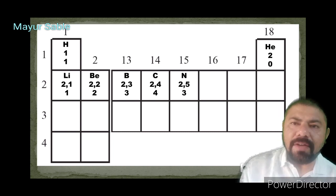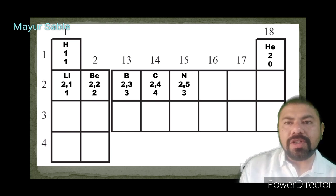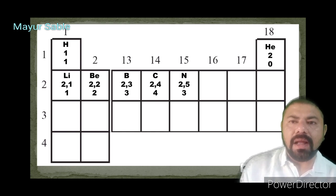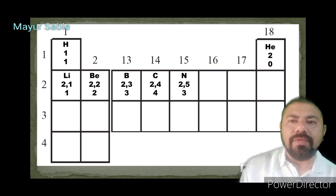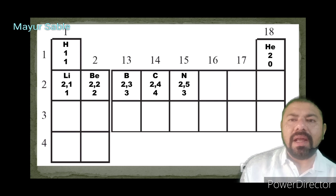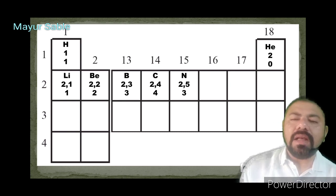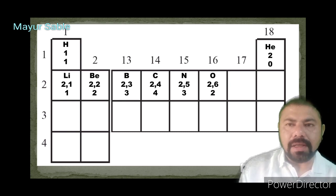Nitrogen has atomic number 7, electronic configuration 2,5. Its nearest inert gas is neon (atomic number 10, configuration 2,8). Nitrogen must gain 3 electrons to match neon's configuration. Since its outermost shell contains 5 electrons, it is easier to gain 3 electrons than to donate 5. Therefore, the valency of nitrogen is 3.